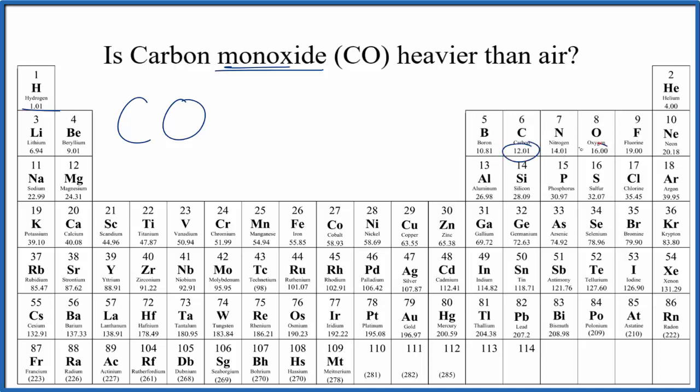Carbon is 12.01, oxygen 16.00. So we have one carbon and one oxygen. We add those together. We get 28.01, and the units are grams per mole. That's the units we use in chemistry. So we have this idea of the mass per mole of carbon monoxide.